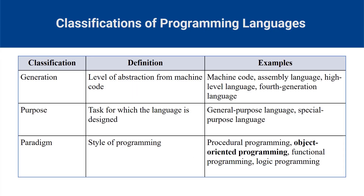A fourth-generation language is a high-level programming language that is designed to be closer to natural language and easier to use than third-generation languages. Fourth-generation languages aim to reduce the complexity and time required to develop software applications by providing more abstraction, automation and user-friendly interfaces. Languages claimed to be fourth-generation may include support for database management, report generation, mathematical optimization, GUI development or web development.